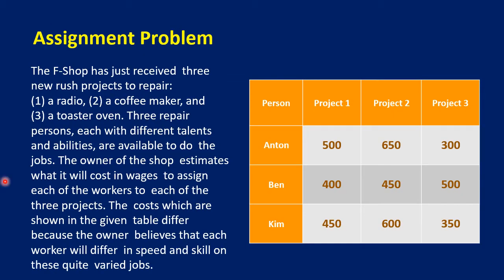Here is an example of an assignment problem. The F-Shop has just received three new rush projects to repair: a radio, a coffee maker, and a toaster oven. Three repair persons — Anton, Ben, and Kim — each with different talents and abilities, are available to do the jobs. The owner of the shop estimates what it will cost in wages to assign each worker to each of the three projects. The costs differ because each worker will differ in speed and skill. For example, if Anton does project one, it will cost 500 pesos; if Anton does project two (repairing the coffee maker), it will cost 650.